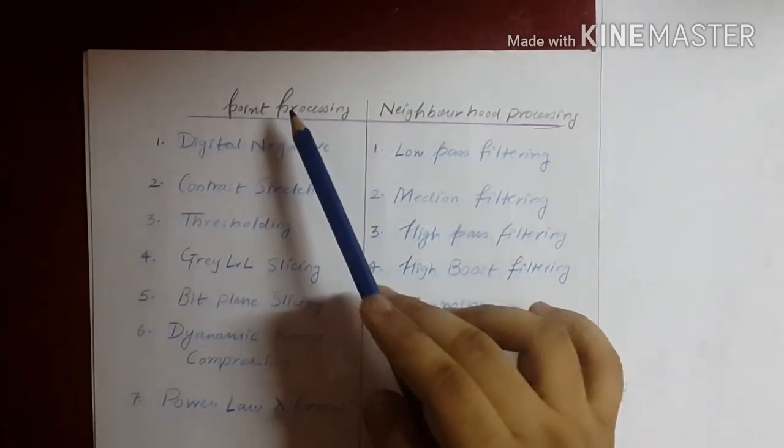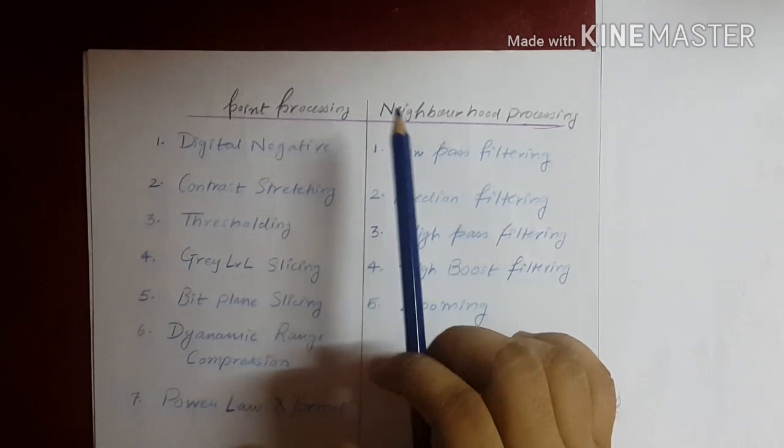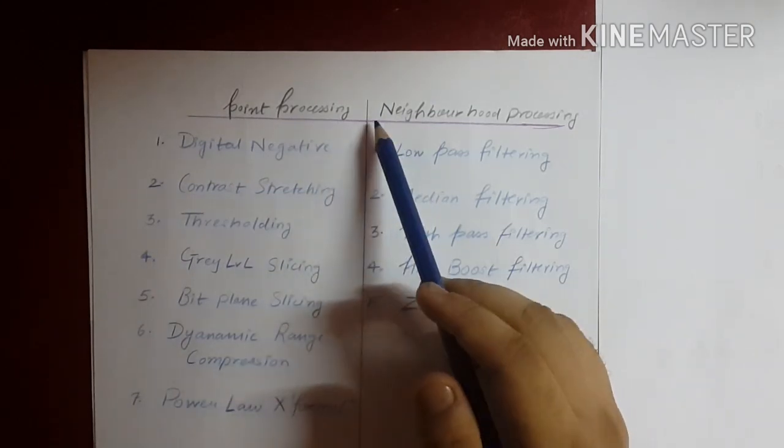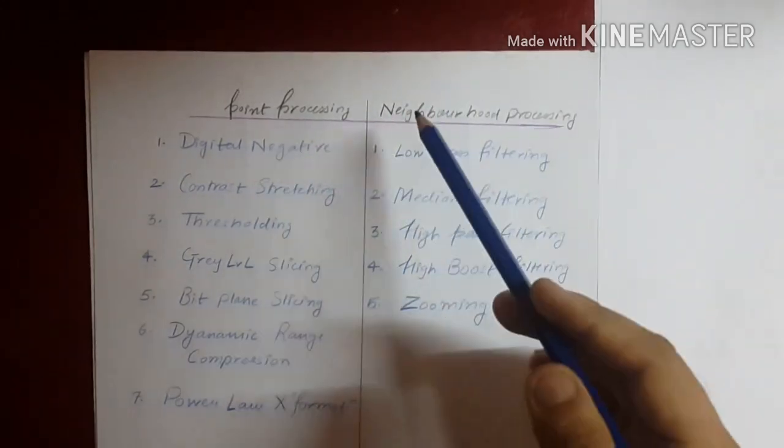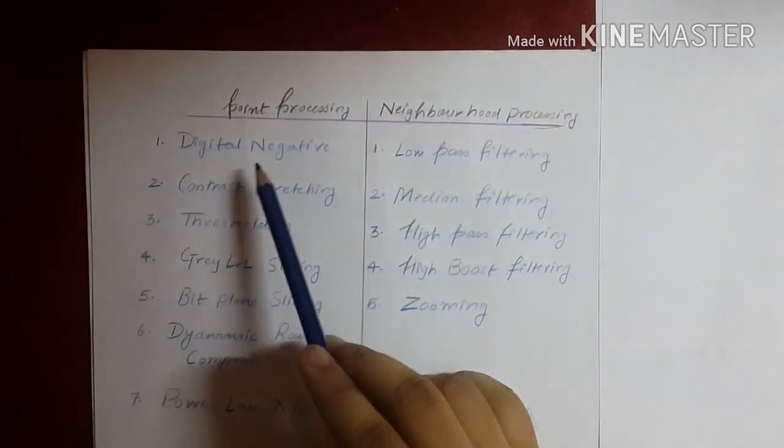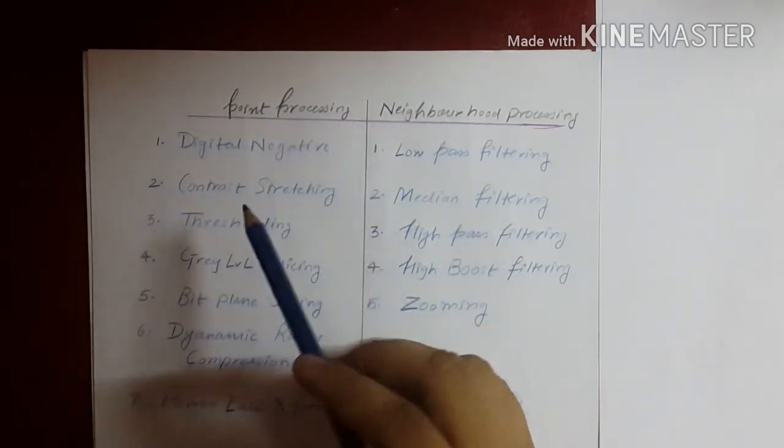Point processing and neighborhood processing, which we have discussed earlier, and here are the types in each of these main processes. The subtypes will be discussed in the upcoming tutorials.